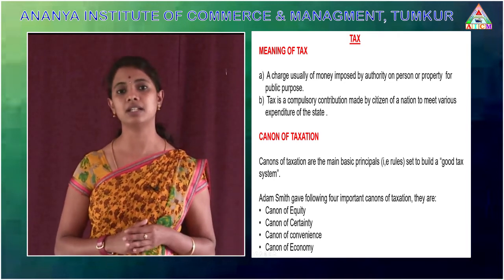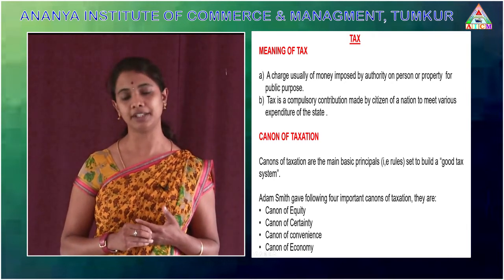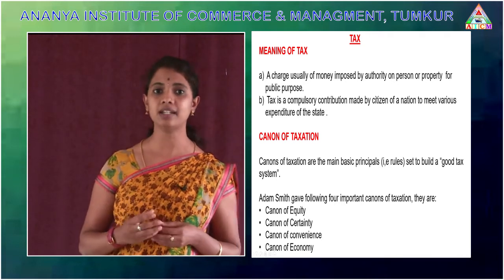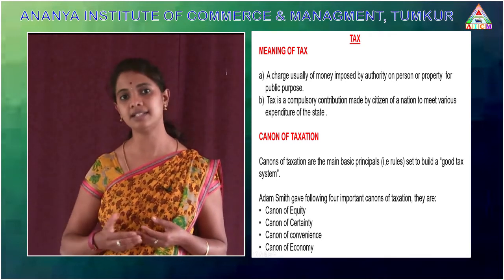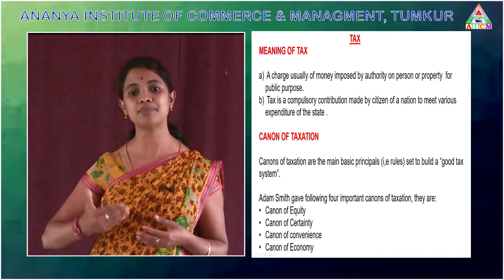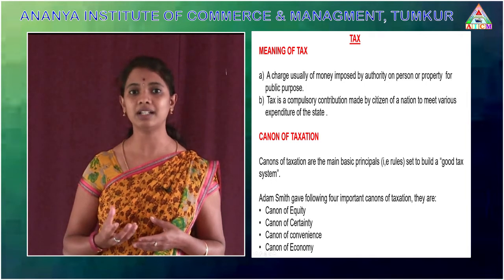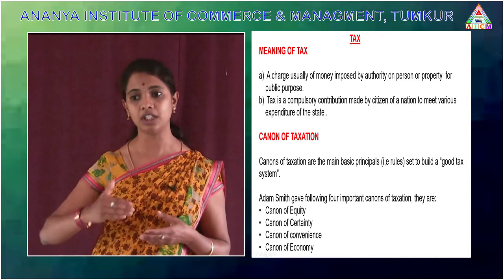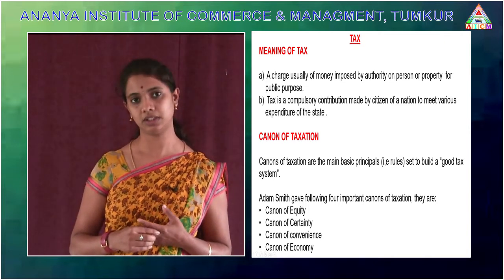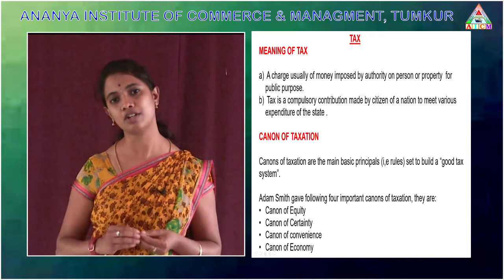The first canon is the canon of equality. Every person should pay tax to the government depending upon their ability to pay. That means a higher income generating person has to pay higher tax, and a lower income generating person has to pay lower tax. The tax payment depends upon their ability to earn income. This is the concept of equality.